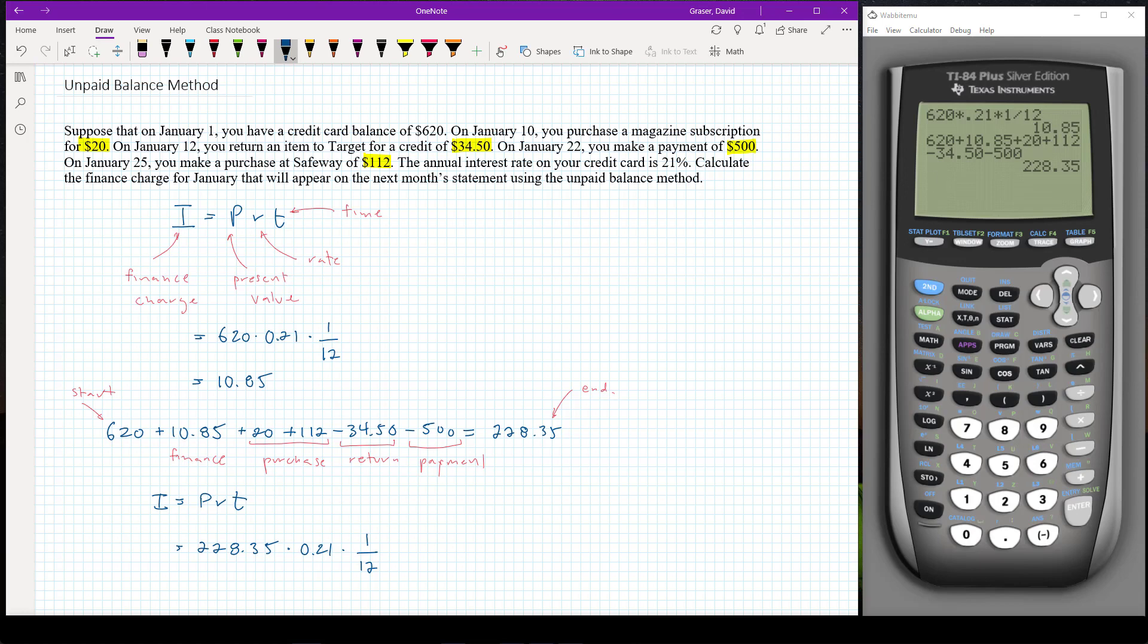So let me go ahead and put those numbers in. So we've got two two eight point three five times point two one times one divided by twelve. So we get three point nine nine six one two five. We're going to round that to the nearest penny. And so that's going to give us approximately four point zero zero. So that would be the finance charge that would appear on the January bill.